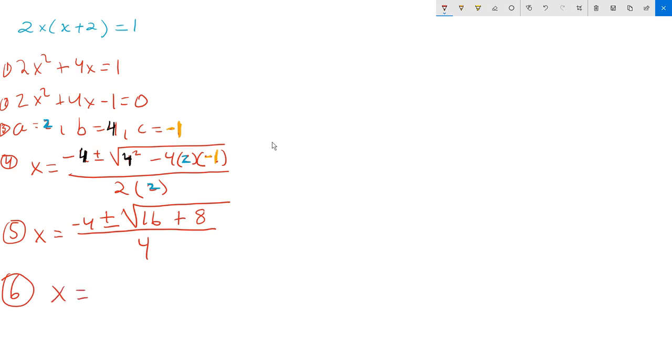Then you continue with step number 6. You're going to have x equals -4 plus or minus. You work under the root symbol. 16 plus 8 is 24. You set that still over the 4. Continue at step 7. x equals -4 ± √24 / 4. 24 has a perfect square as a factor, so we need to take care of that. I'm going to write 24 as 4 times 6 for that reason.